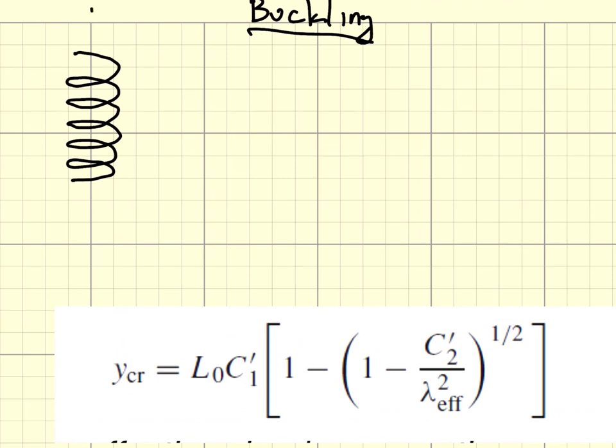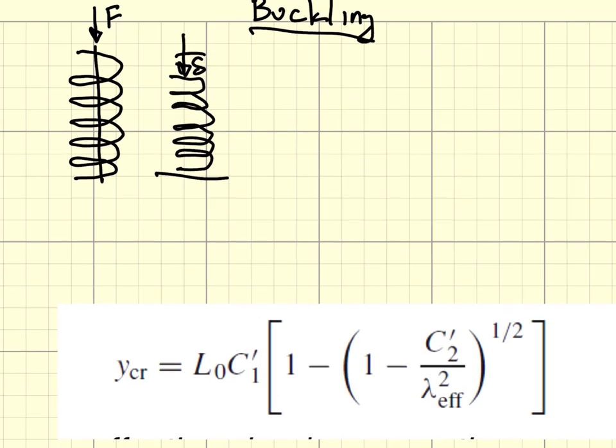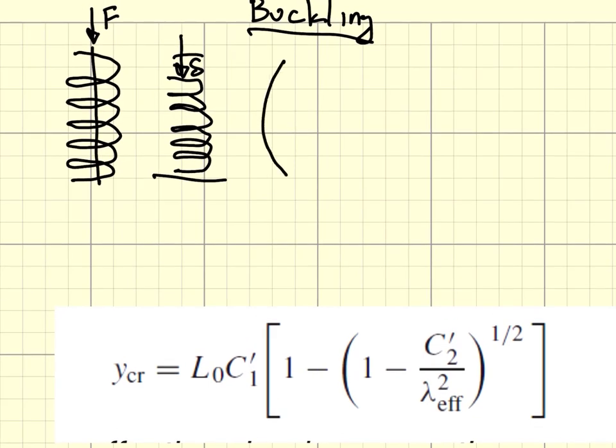I show a simple representation of a coil spring where I apply a load to it. That thing could elastically deform under the influence of that load, or if I just look at the centerline of it, it could buckle, just like column buckling.